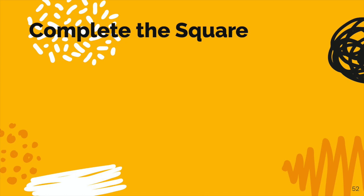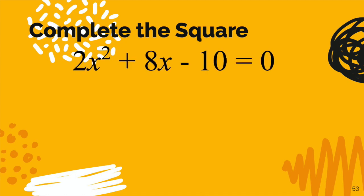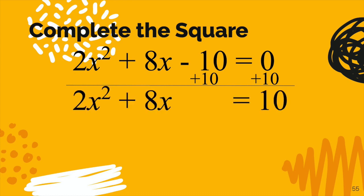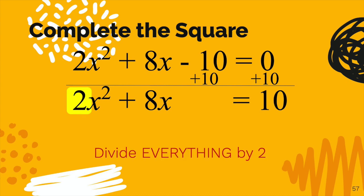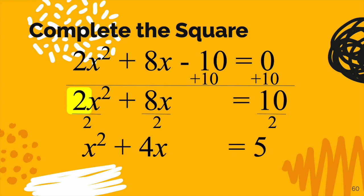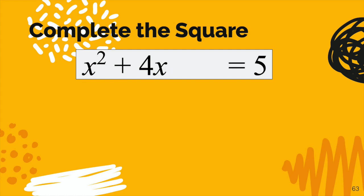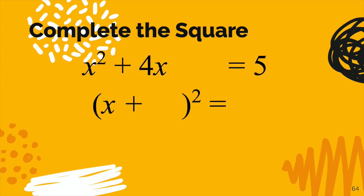Let's move on to another example with a little more complexity. Take a look at this: 2x squared plus 8x minus 10 equals 0. What's different here is there's a number in front of the x squared and everything is on the left side. We're going to use the completing the square method. First, get the 10 to the other side by adding 10 on both sides. Now we deal with that 2 — we really want that to be a 1, so we divide everything by 2. That gives us x squared plus 4x equals 5. I take that middle term, 4, and divide it in half — that's the number that goes inside the parenthesis.